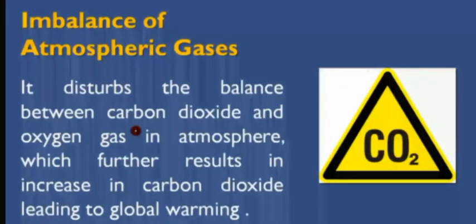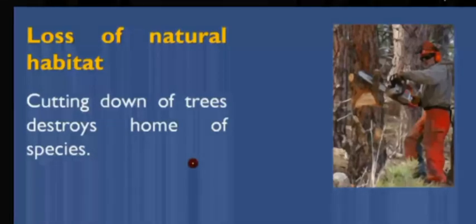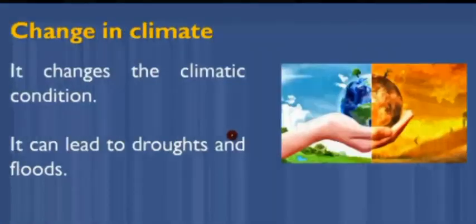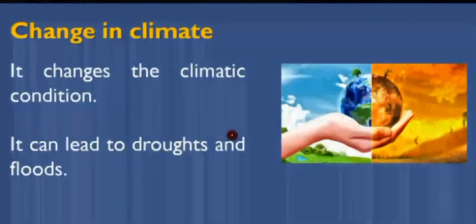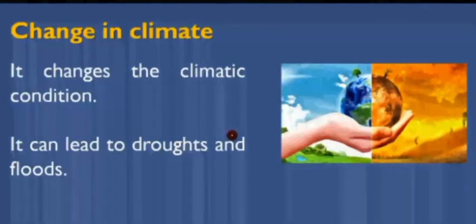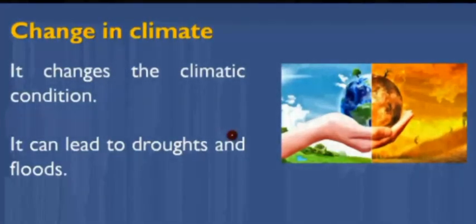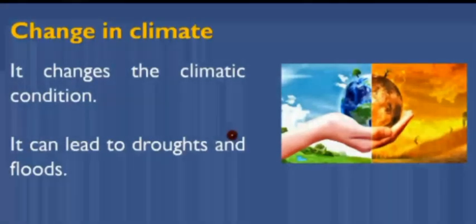Deforestation also causes the greenhouse effect. Next is loss of natural habitat — cutting down of trees destroys the home of many species. Then there is change in climate — it changes climatic conditions and can lead to drought and floods. Nowadays, seasons come but with less rainfall, because due to climatic changes many industries and buildings are built, causing deforestation and reduced rainfall.